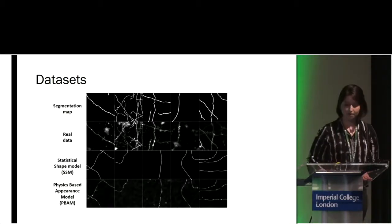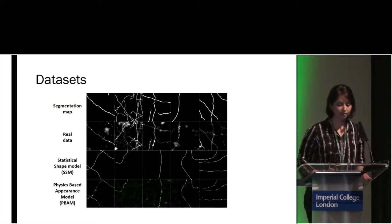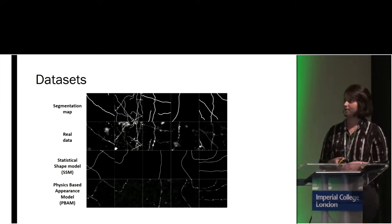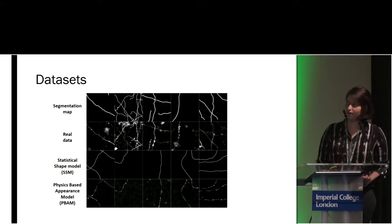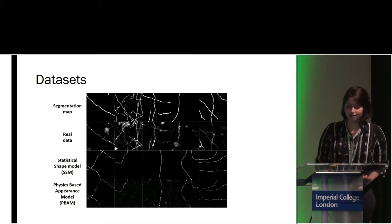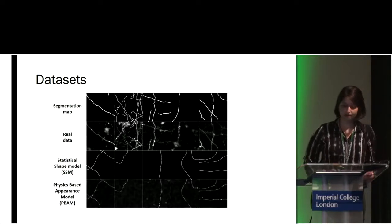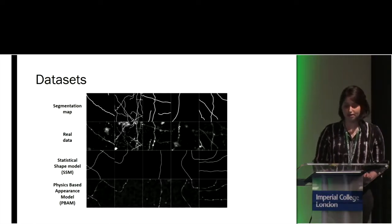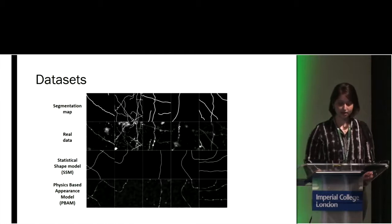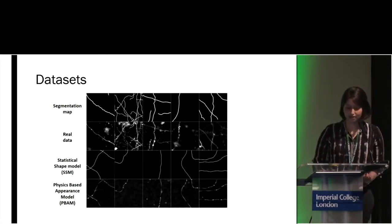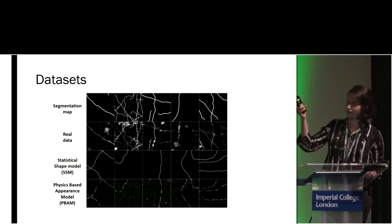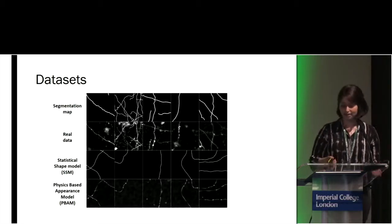In our paper we use two different datasets. One is a real dataset collected using two-photon microscopy in the mouse. Here we see at the top the segmentation maps that we manually label, and below that we see the real data which can have a varying number of axons, and also the synapses which are called boutons on the axons. In addition we use a synthetic model based on random walks in the space, with a physics-based appearance model which makes these labels look more realistic like axons.